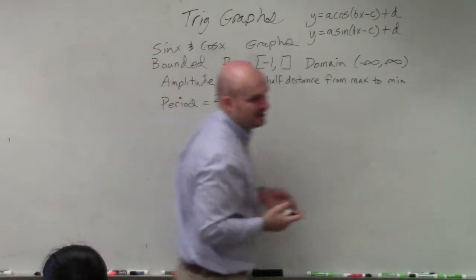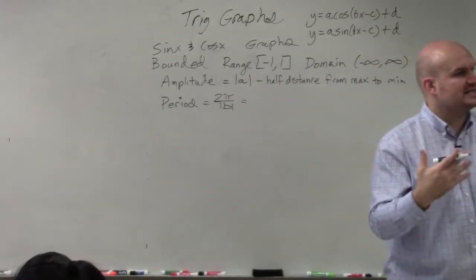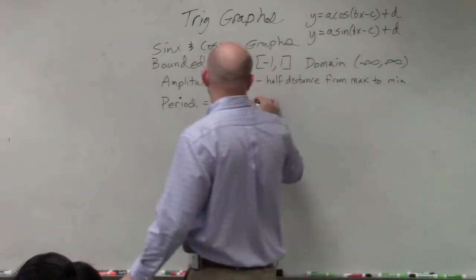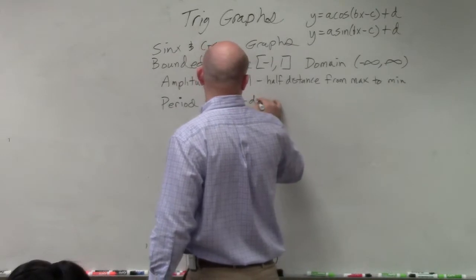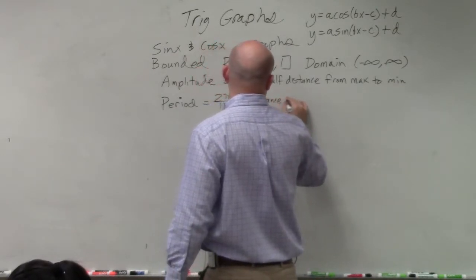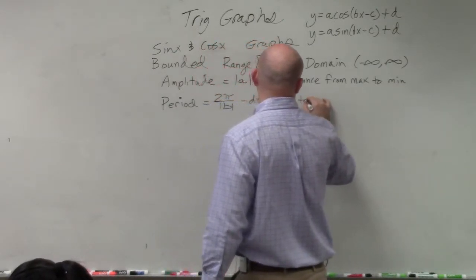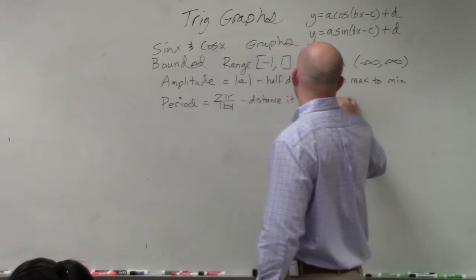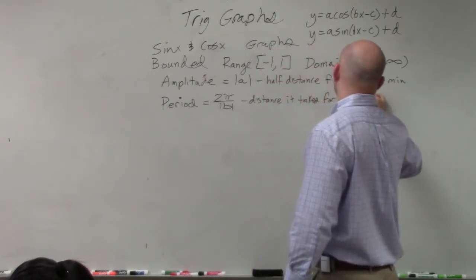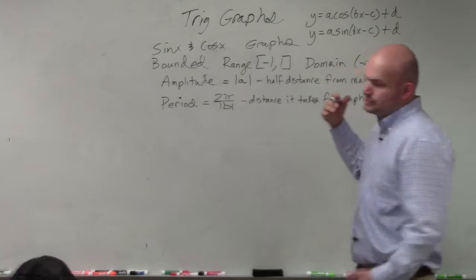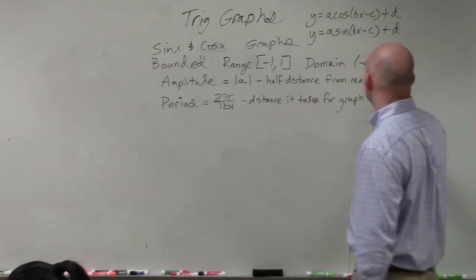So 2 pi divided by the absolute value of b. And basically, the period is basically saying how long it takes the graph to repeat itself, or to complete itself, to repeat, or to complete a cycle.